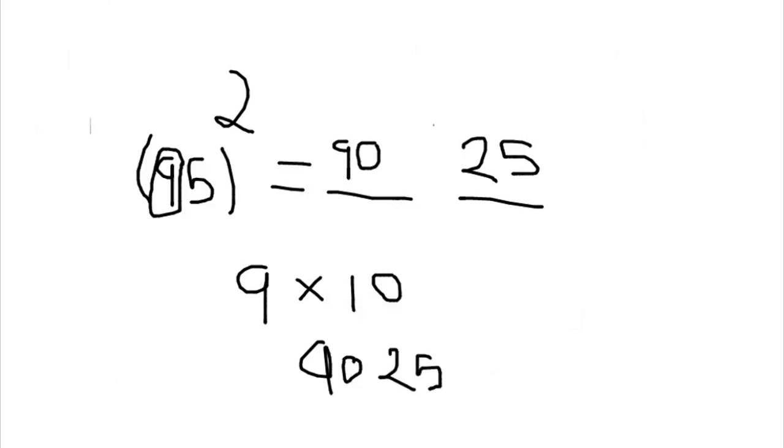Now remember guys, this trick works for two digits as well as three digits. So if you are going to find out the square of a number consisting of three digits ending with five, you can use the same method. Let's take one simple example and see what happens.